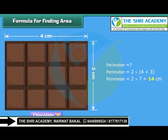Alternatively, perimeter is equal to twice the sum of the length and width.